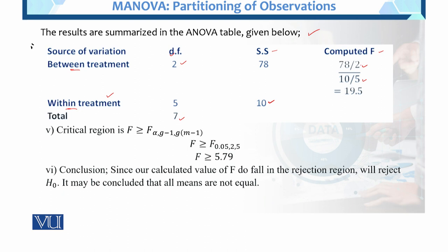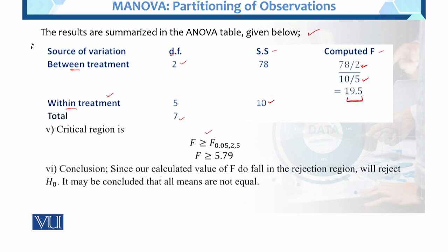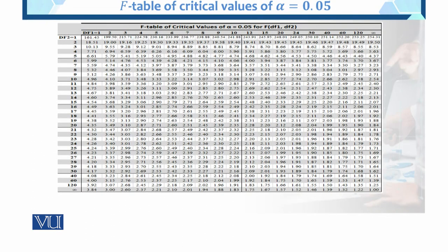F is computed as mean square between divided by mean square within. Calculated F value = 19.5. The critical region: reject H₀ if calculated F is greater than table value. At alpha = 10%, alpha/2 = 0.05, with degrees of freedom 2 and 5, the table value F is 5.79.